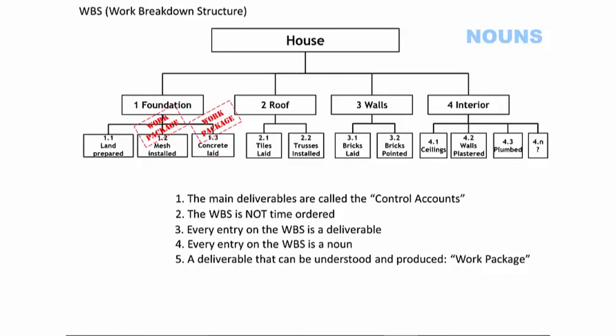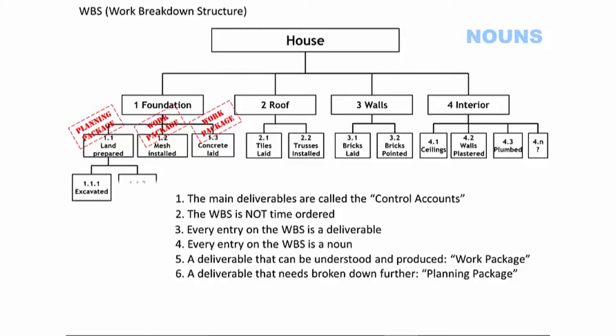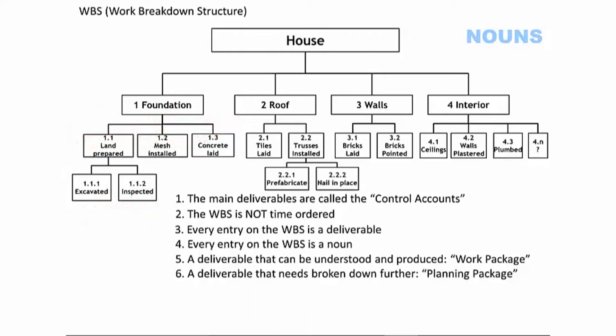A sub-deliverable that needs to be decomposed further is called a planning package. So 'land prepared' is a planning package. We decompose it further until we arrive at work packages, and then we don't need to do any more on that control account. The numbering system has two purposes: firstly, it helps you navigate the breakdown structure. For example, work package 4.3.2.1 tells you immediately it is part of the interior, part of the plumbing, and the first work package in the second planning package.